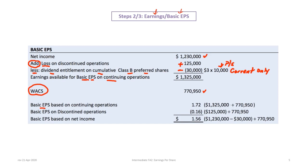The weighted average common shares is 770,950. Basic EPS on continuing operations is $1,325,000 divided by 770,950, which equals $1.72. The loss on discontinued operations of $125,000 divided by 770,950 is approximately $0.16 per share. Therefore, basic EPS on net income is $1.56. We can confirm this by taking net income minus preferred share dividends and dividing by 770,950 shares — which also gives $1.56.